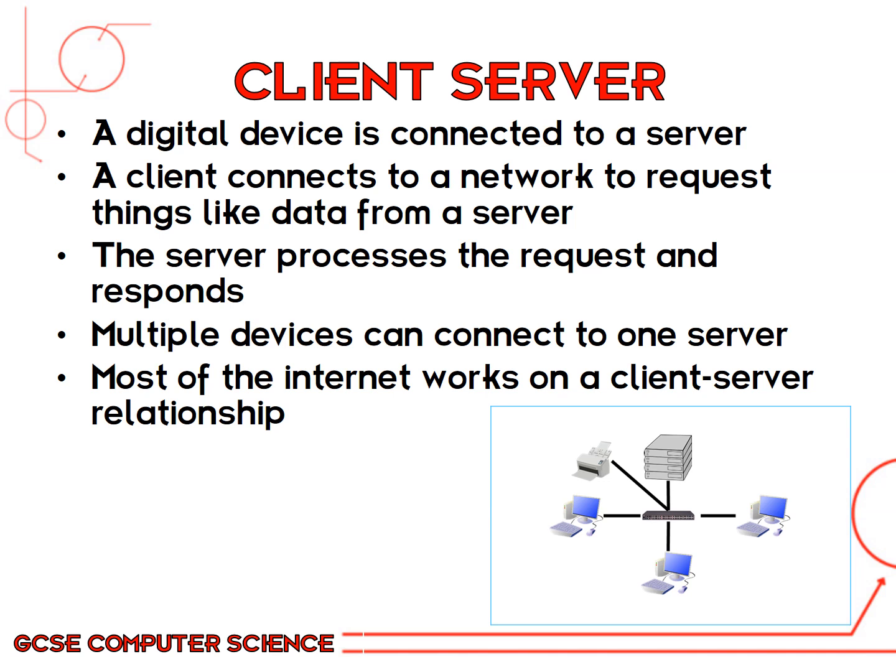Multiple devices can connect to one server, and this is how most local area networks are formed. Most of the internet works on a client-server relationship. Looking at the diagram shown here, you can see a server with multiple devices connected, including a printer. This means all three computers could access that one printer by sending a request through the server to print something.